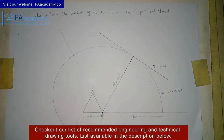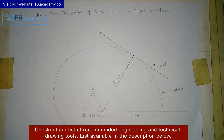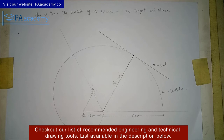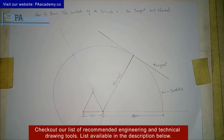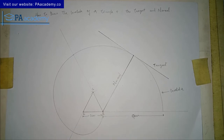So this is how you draw the involute of a triangle and show the tangent and the normal. In the description of this video, I'm going to be leaving a link showing you how to draw the involute of a square, a circle, a pentagon, a hexagon, and how to draw their tangent and normal. Please check out those videos and our website paacademy.co, as well as our playlist on technical and engineering drawing. Please click on the subscribe button — it's absolutely free. That is it for this video and I'll see you all in another video. Thank you very much.